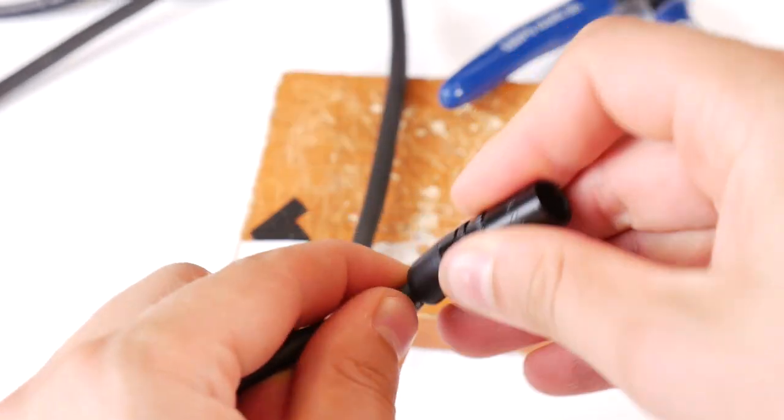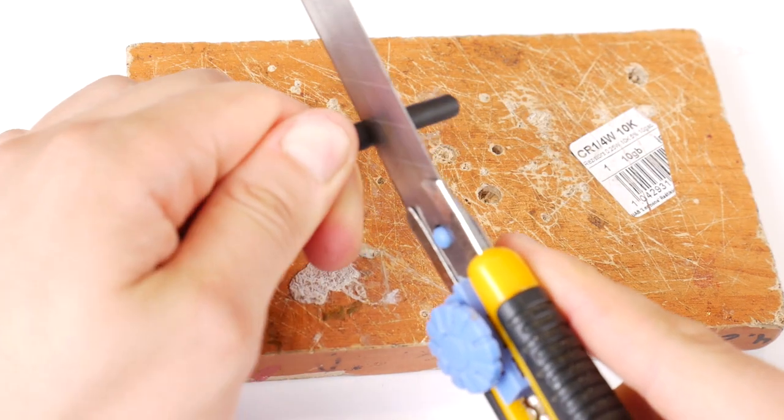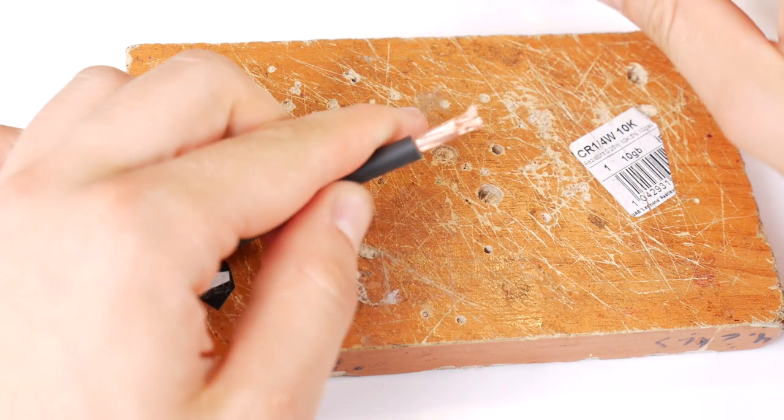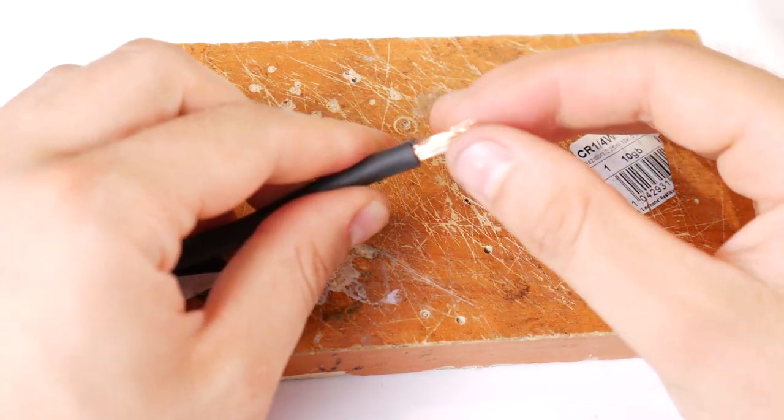Put the RCA connector housing on the cable, as it can't be done after soldering. With a sharp paper knife remove the outer cable jacket, but be careful not to damage the inner conductors.